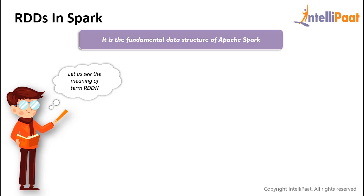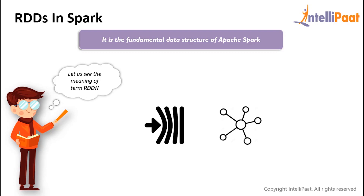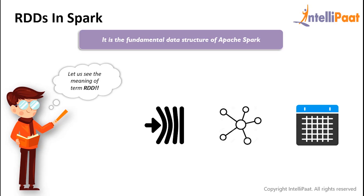Now let us understand the concept of RDDs in Spark. When processing data over multiple jobs we need to reuse and share data, which can be achieved through in-memory data sharing — faster than network and disk sharing. This is where RDDs come in. RDD stands for Resilient Distributed Dataset and it is the fundamental data structure of Apache Spark. By 'resilient' we mean fault-tolerant, as it can recompute missing or damaged partitions in case of a node failure using the RDD lineage graph. 'Distributed' means data resides on multiple nodes, and 'dataset' represents records of the data you work with. The user can load the dataset externally — either a JSON file, CSV file, text file or a database.